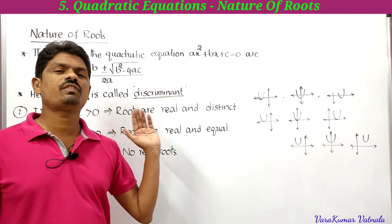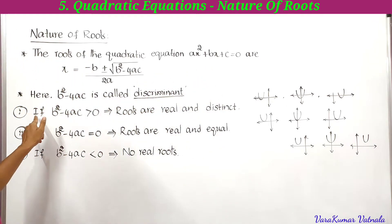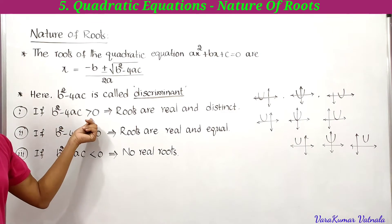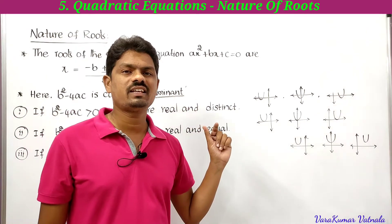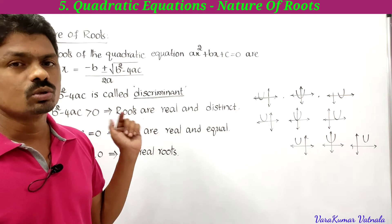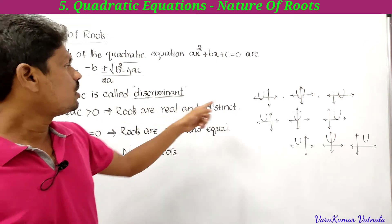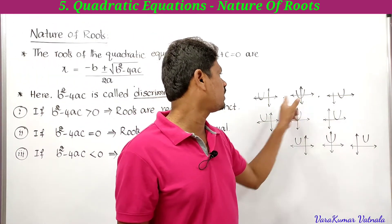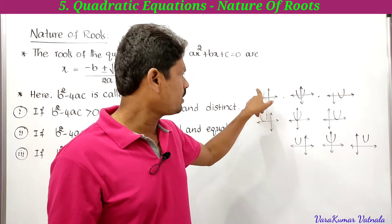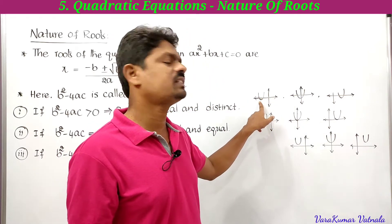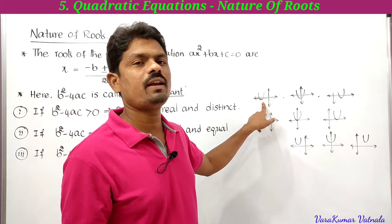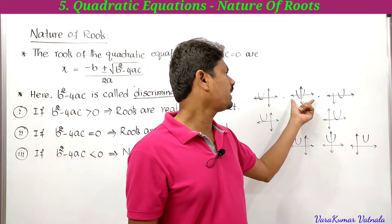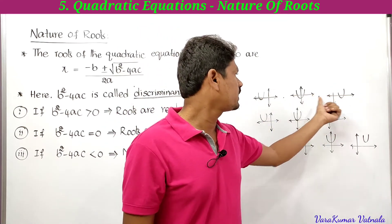If b²-4ac is greater than 0 (a positive value), the roots are real and distinct. If we draw the graph, we can get any one of three possible graphs where the parabola intersects the x-axis at two distinct points. The x-coordinates of those points are the roots of the quadratic equation.